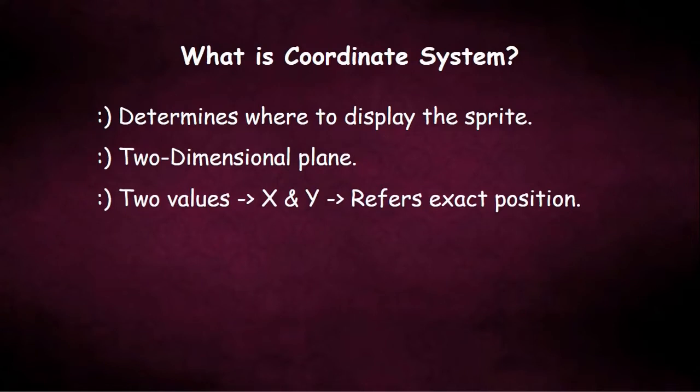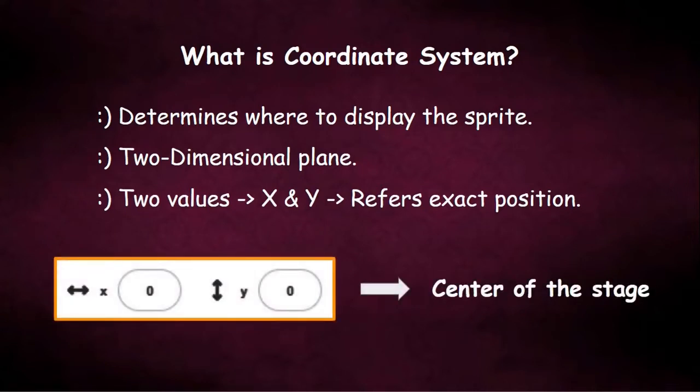Those values are x and y. And for x and y, the value is zero means it is called the center of the stage.